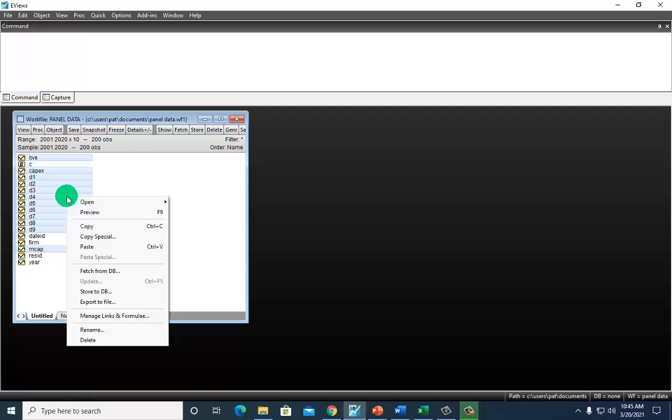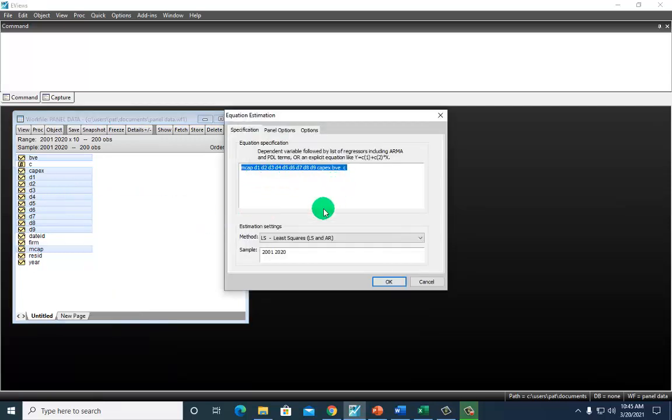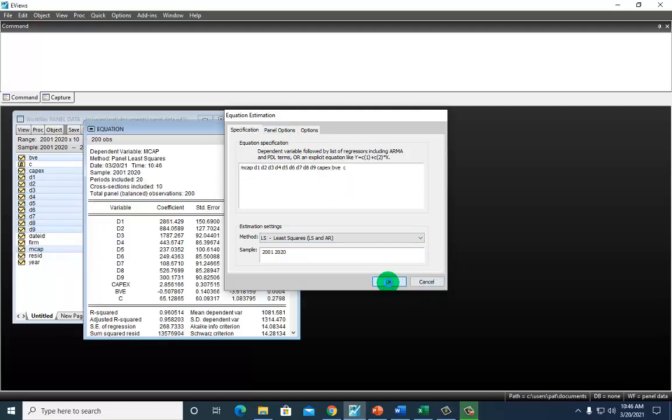Right click on any of these guys right here. And open as equation right there. And there you have it. Now leave this as least squares. You don't have to do any panel options. The reason is you already have specified the dummy variable. So go ahead and click OK.